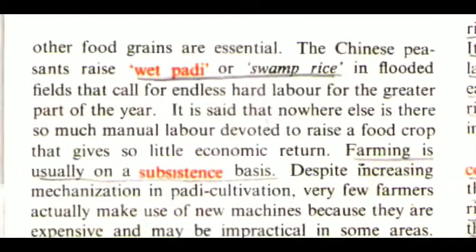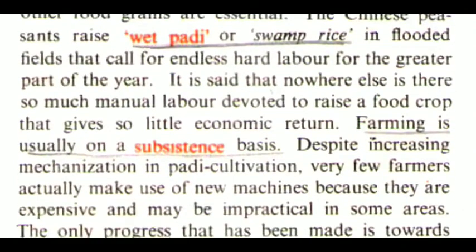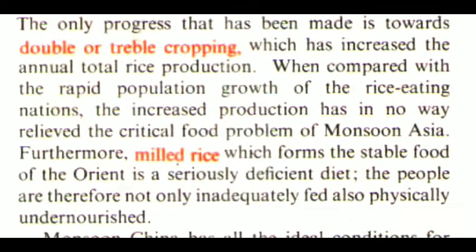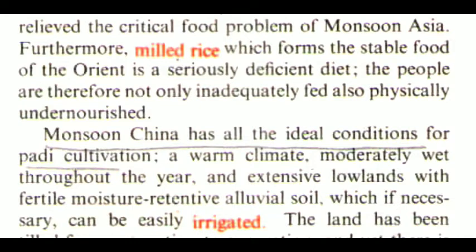The Chinese peasants raise wet paddy or swamp rice in flooded fields that call for hard labour for the greater part of the year. It is said that nowhere else is there so much manual labour devoted to raise a food crop that gives so little economic return. Farming is usually on a subsistence basis. Despite increasing mechanisation in paddy cultivation, very few farmers actually make use of new machines because they are expensive and may be impractical in some areas. The only progress that has been made is towards double or treble cropping, which has increased the annual total rice production. When compared with the rapid population growth of the rice-eating nations, the increased production has in no way relieved the critical food problem of monsoon Asia. Furthermore, milled rice, which forms the staple food of the Orient, is a seriously deficient diet. The people are therefore not only inadequately fed but also physically under-nourished.